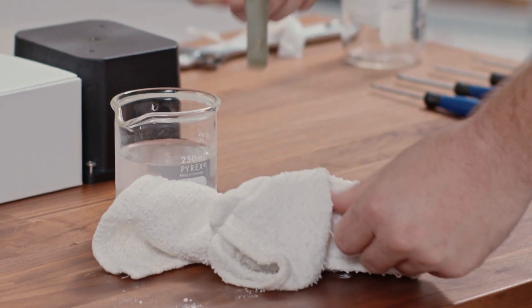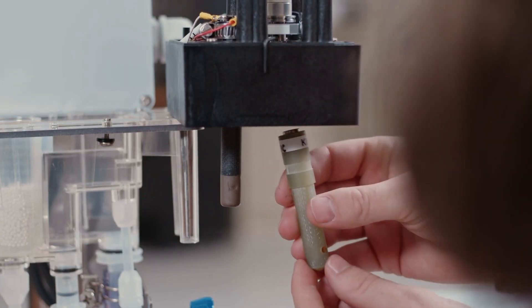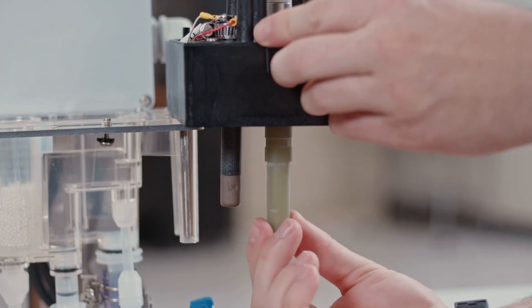With the electrode polished and rinsed, we can then reinstall it back onto the analyzer. To replace it, you do the same process of removing it in reverse.